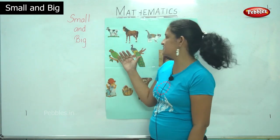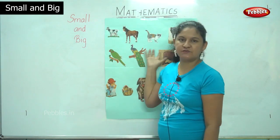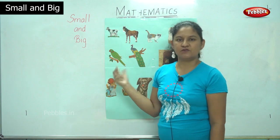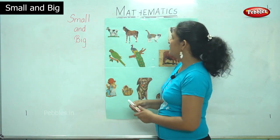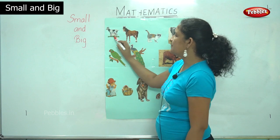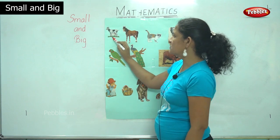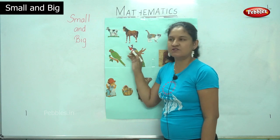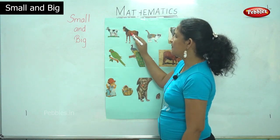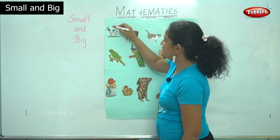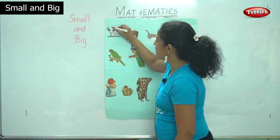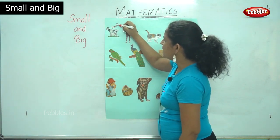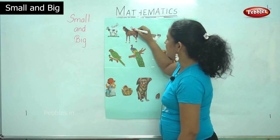Now we have a small activity. In these pictures we are going to see which is smaller and which is bigger. In my first chart I have the picture of a goat and a horse. When you compare the goat to the horse, the goat is small and the horse is big.